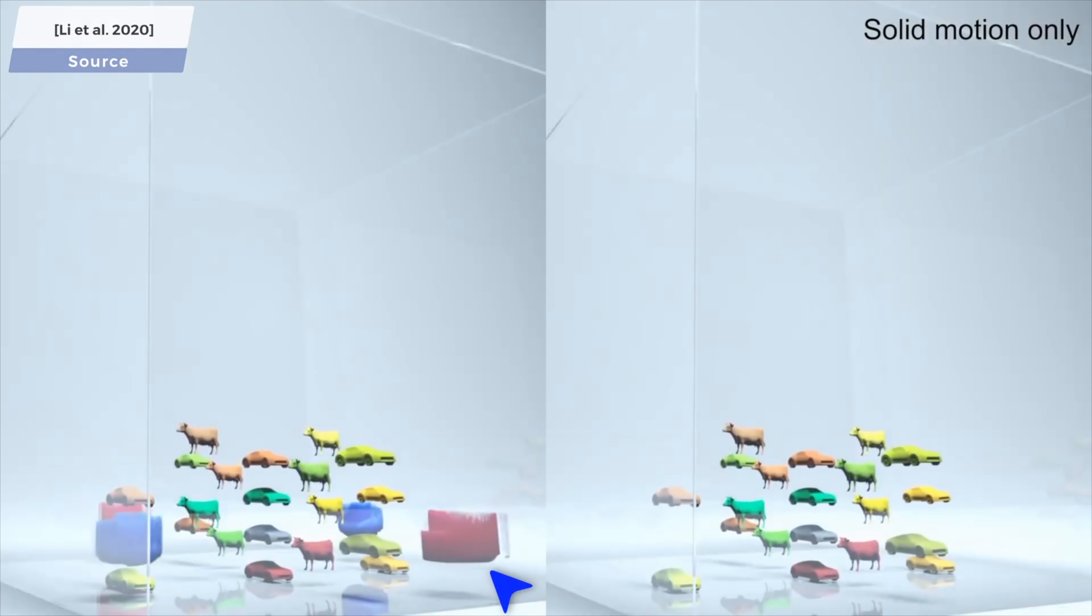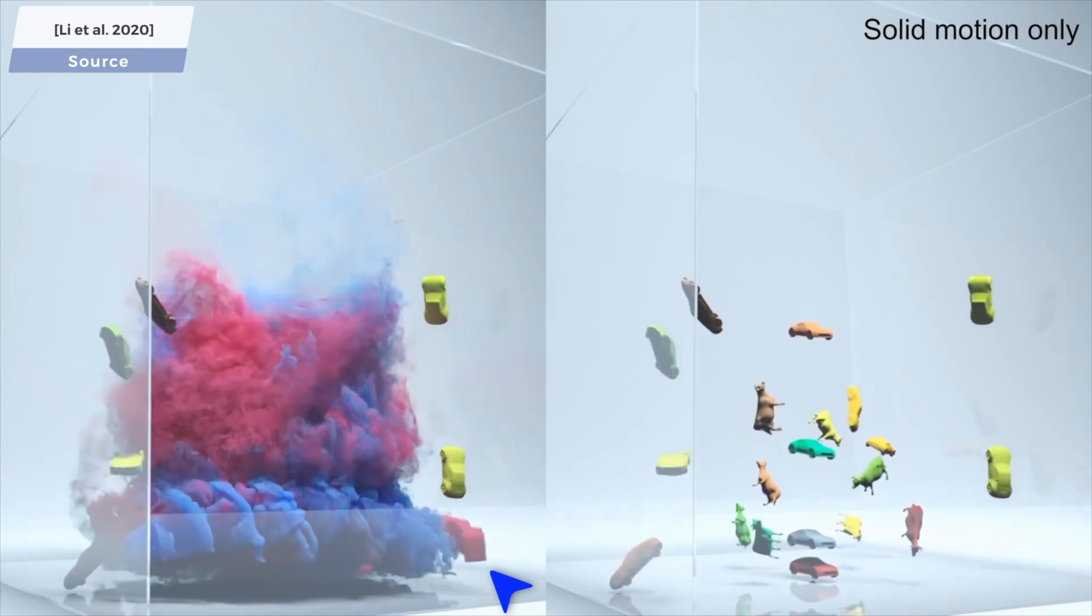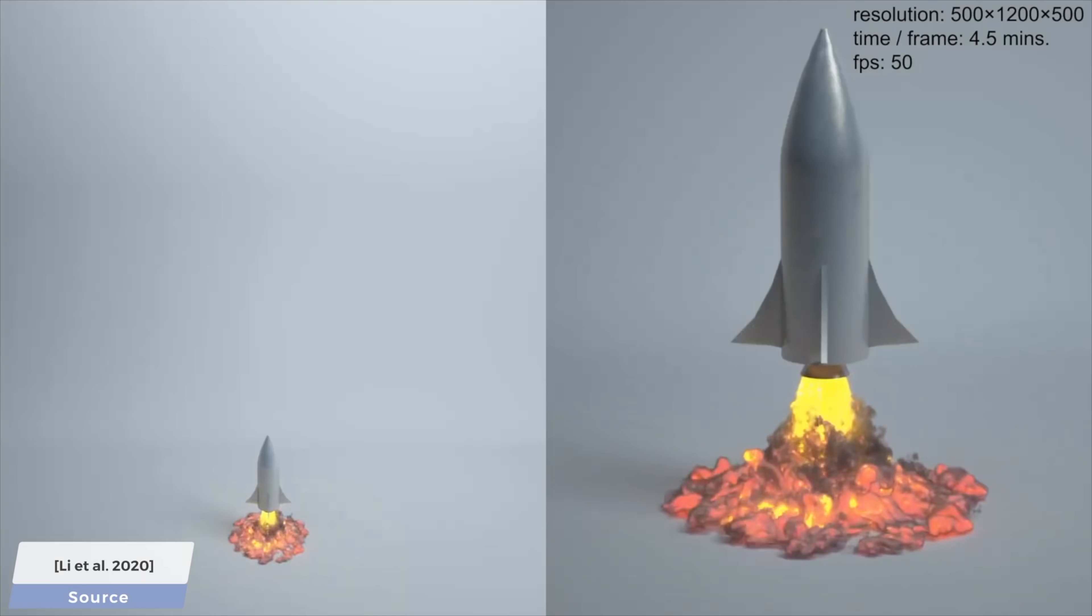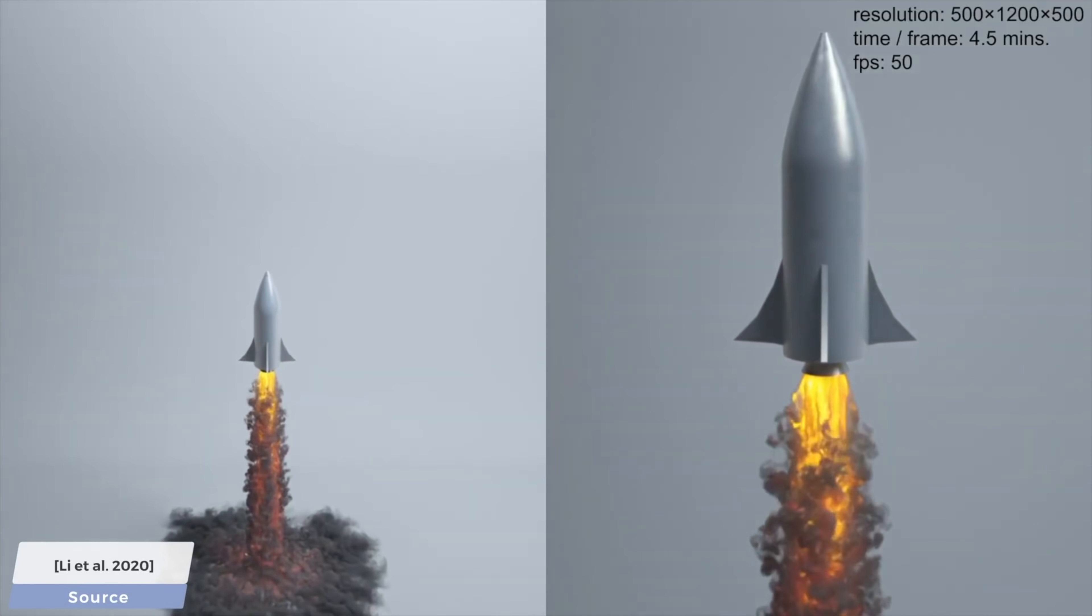So, coupling means interaction between different kinds of objects. And two-way coupling seems like the real deal. Here, it is also required to compute how this fiery smoke trail propels the rocket upward.